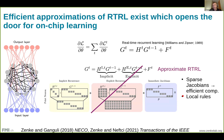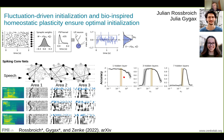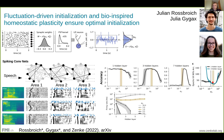These local rules only require local information. E-prop, which Charlotte discussed earlier, is one such rule, as is SuperSpike/OSTL by IBM — many others fall into this class of approximations. On initialization: the brain uses fluctuation-driven firing or the balanced state. Two of my students developed a theoretical framework to initialize deep spiking neural networks in this fluctuation-driven regime, which turns out to be conducive for learning. Deeper networks in this optimal initialization regime can train fastest, and you can achieve even deeper networks by adding biologically inspired homeostatic plasticity.